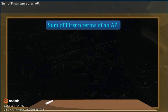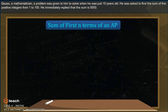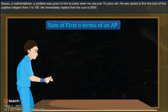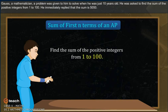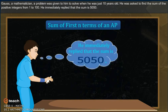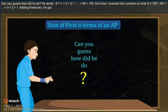Sum of first N terms of an AP. A mathematician was given a problem to solve when he was just 10 years old. He was asked to find the sum of the positive integers from 1 to 100. He immediately replied that the sum is 5050. Can you guess how he did it?